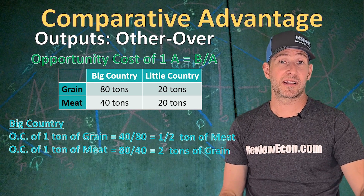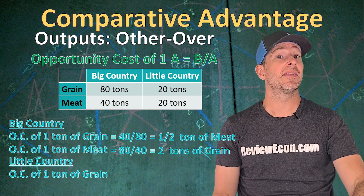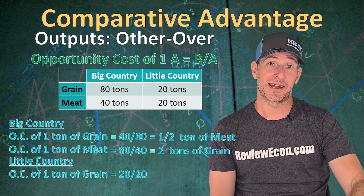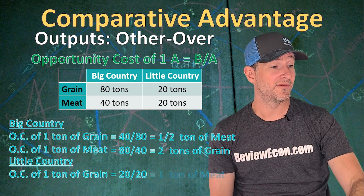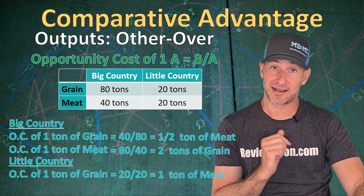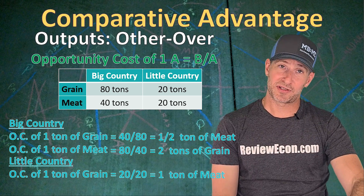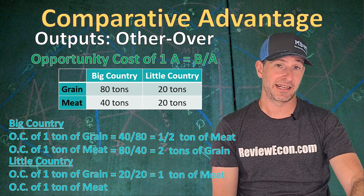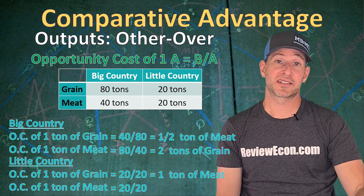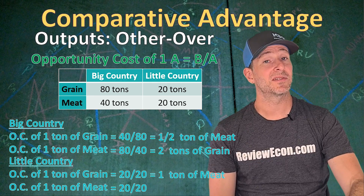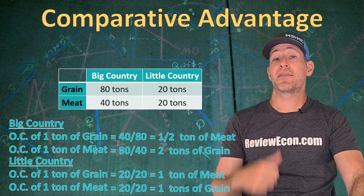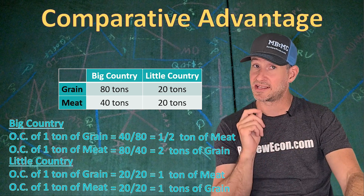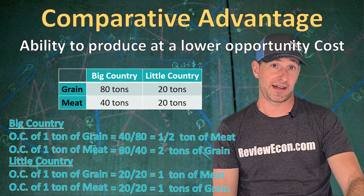Now for Little Country: when they produce one ton of grain, the opportunity cost is the numbers for the other one — 20 divided by 20 — giving us one ton of meat lost for every ton of grain produced. And the opportunity cost for the production of meat is still 20 divided by 20, meaning the opportunity cost of producing one ton of meat is one ton of grain for Little Country.